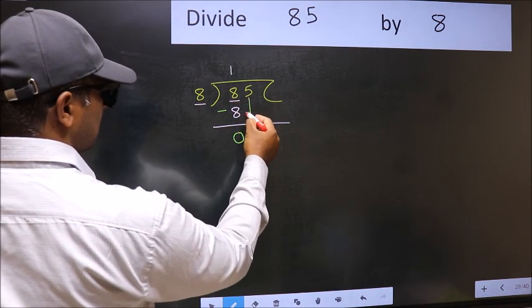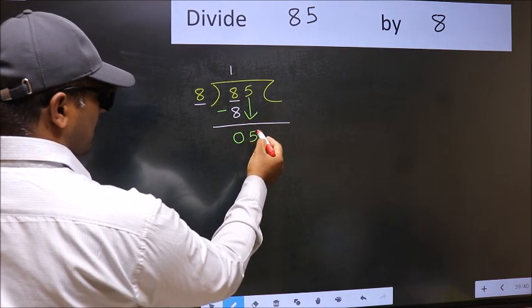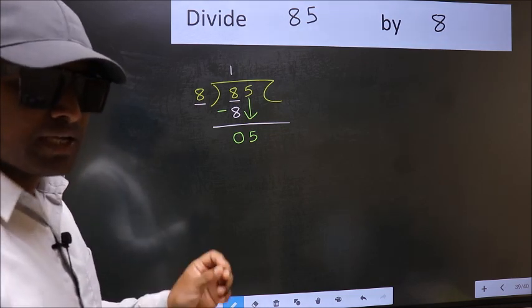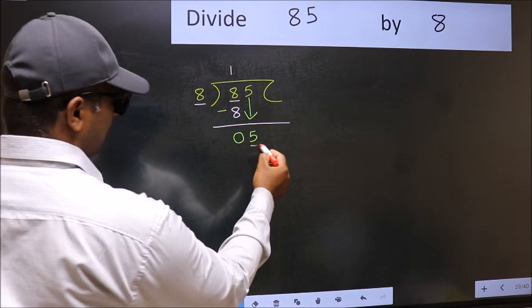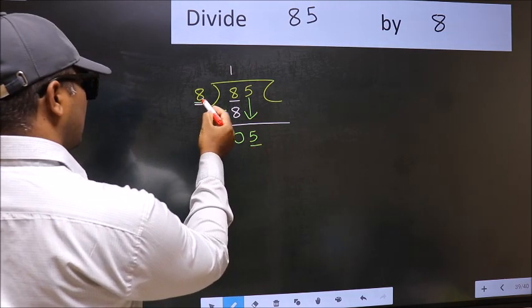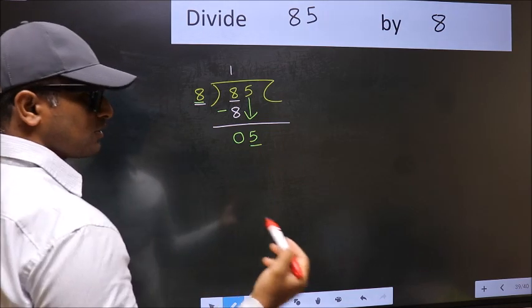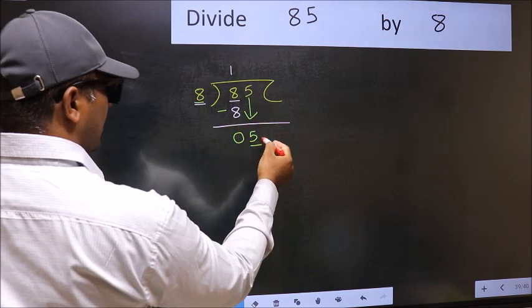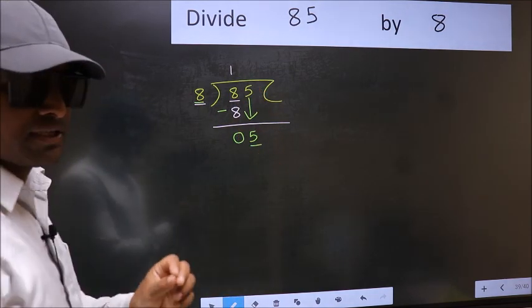After this, bring down the beside number. So, 5 down. After this step, the mistake happens. And the mistake is this. Here we have 5 and here 8. 5 is smaller than 8. So, what many do is they directly put dot and take 0. Which is wrong.